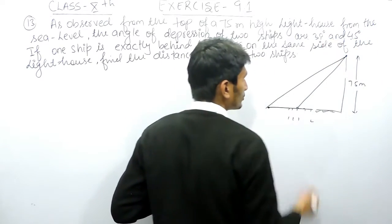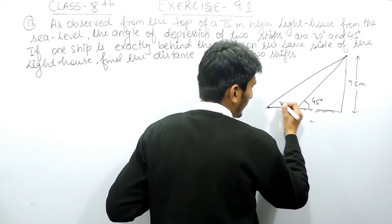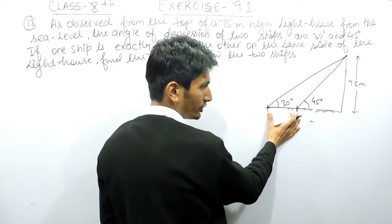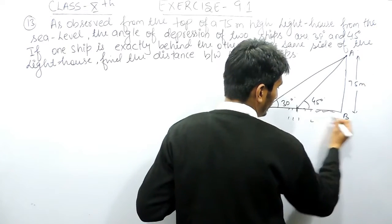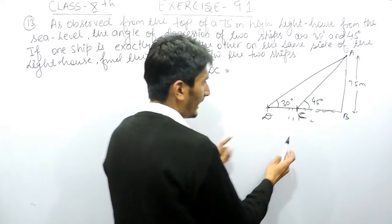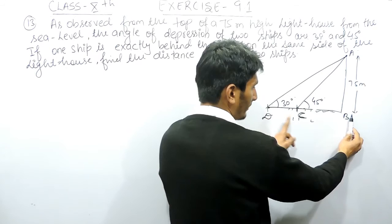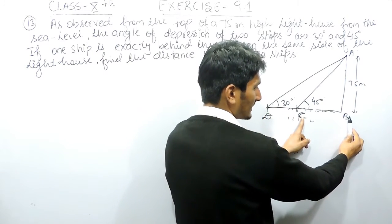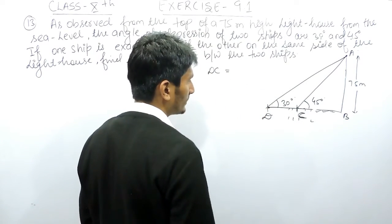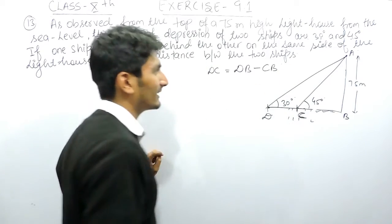Since the two triangles have angles 30 and 45 degrees, the angle closer to the height will be the greater angle and this will be the smaller angle. Now we need to find the distance between the two ships. I'll name the points: this is A, B, C, and T. I have to find the value of DC. To find DC, I have to subtract CB from DB, so DC equals DB minus CB.